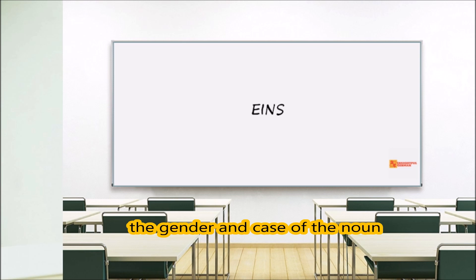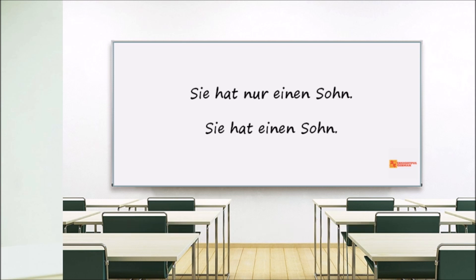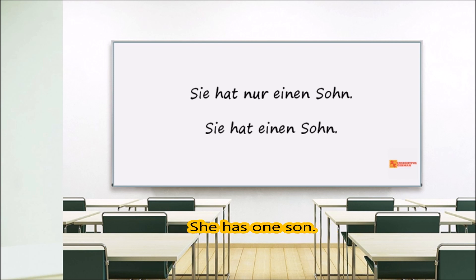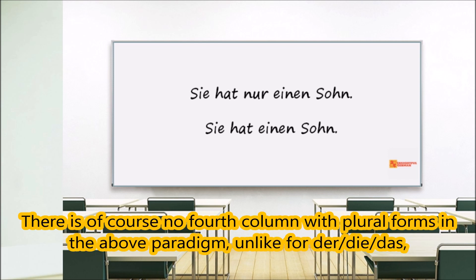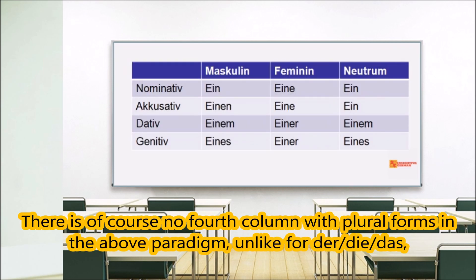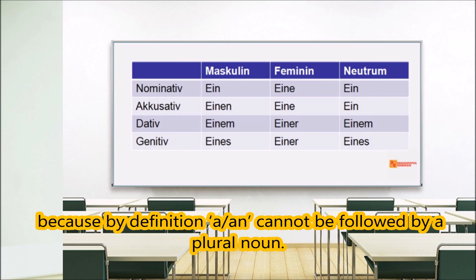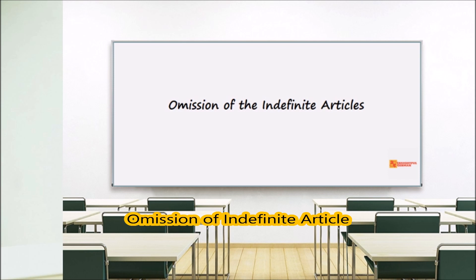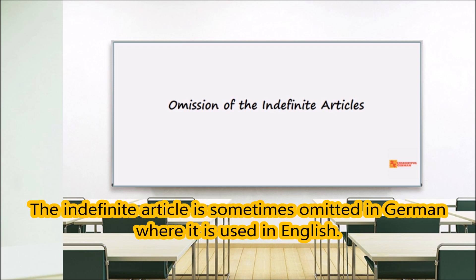The distinction in meaning between 'one' and 'a' is made by stressing the former, with the ending being determined by the gender and case of the noun. For example: 'Sie hat nur einen Sohn.' There is of course no plural form in the above paradigm, unlike for der, die, das, because by definition 'a/an' cannot be followed by a plural noun.